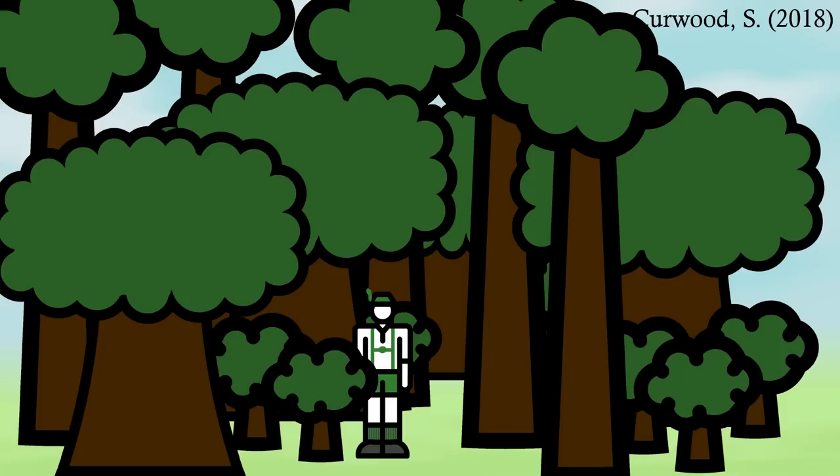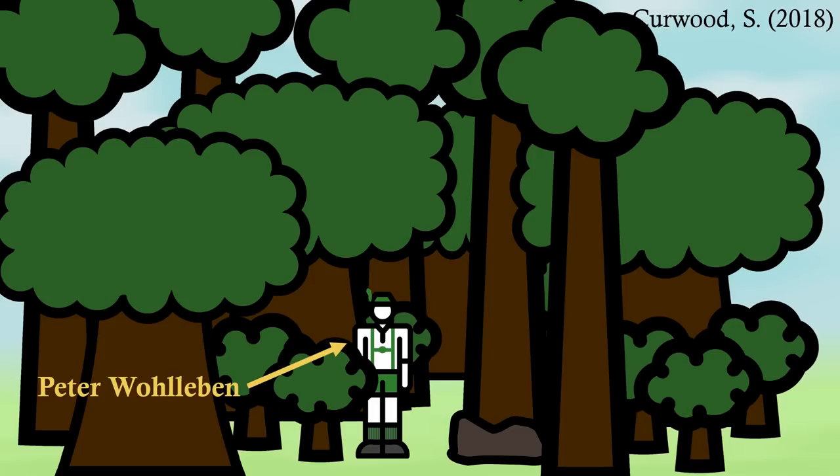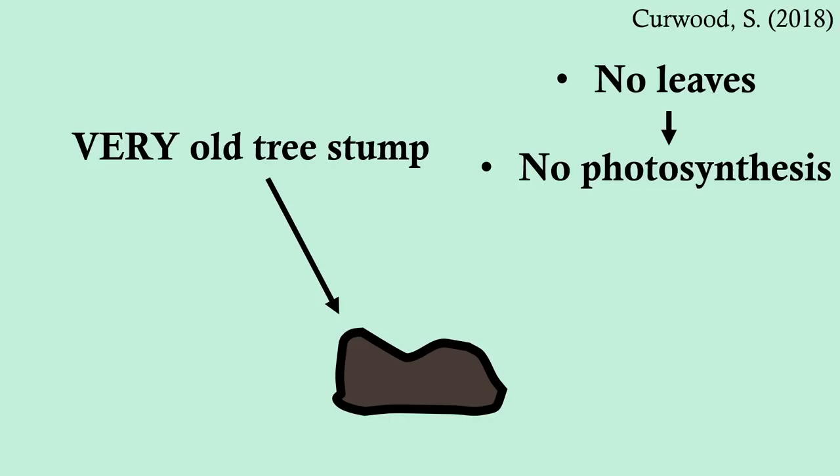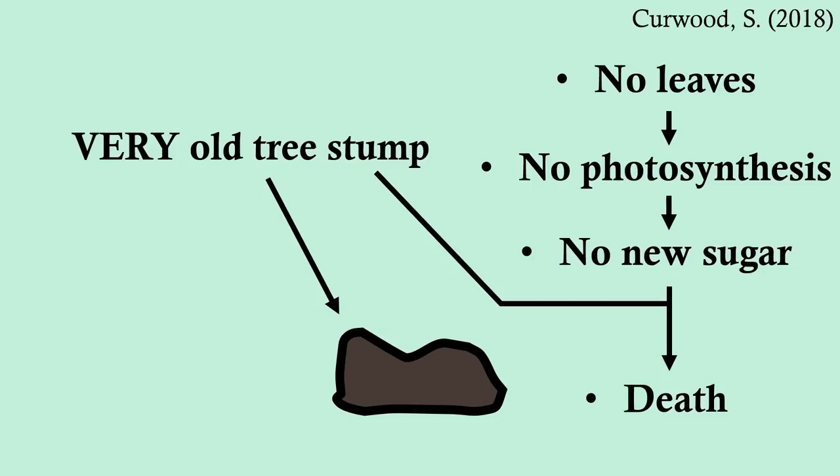One day, walking through the woods, a German forester called Peter Vorleben discovered a set of stones, except it wasn't. It was an extremely old tree stump from a tree that, as it turned out, had been felled centuries earlier. It had no leaves, which means no photosynthesis, which means no new sugar, which means, after all this time, it should have been long gone. But it was alive.